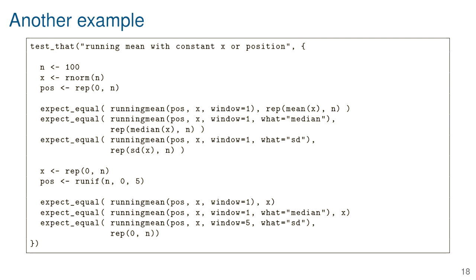This points to a simple example of boundary conditions to think about. For the running mean, you can either make the position values all exactly the same, or make all output values exactly the same — both are boundary cases for the inputs. Those kinds of edge cases are exactly what you want to test.